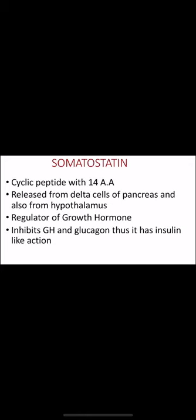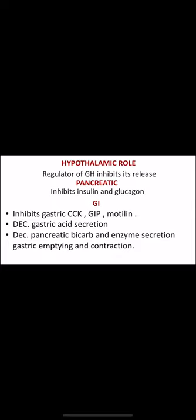Somatostatin is a cyclic peptide of 14 amino acids released from delta cells of the pancreas and from the hypothalamus. It is a regulator of growth hormone — it inhibits GH release. Since growth hormone is diabetogenic, somatostatin has an opposing insulin-like action, and also inhibits glucagon.